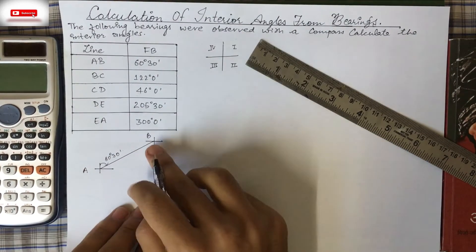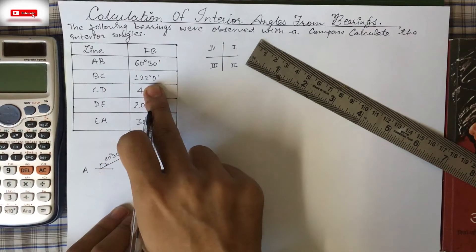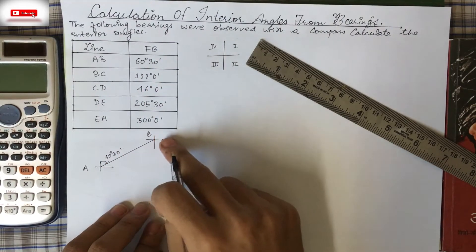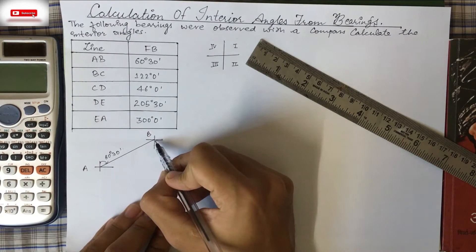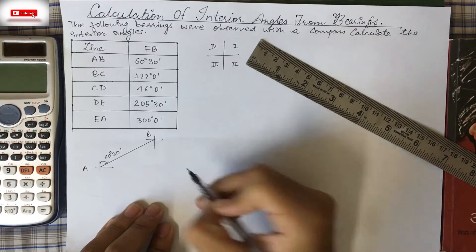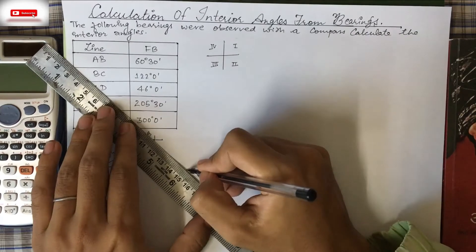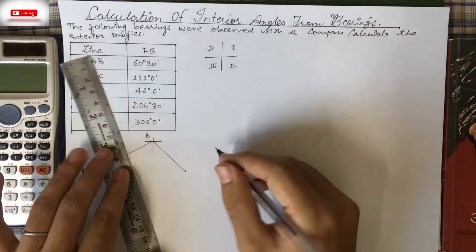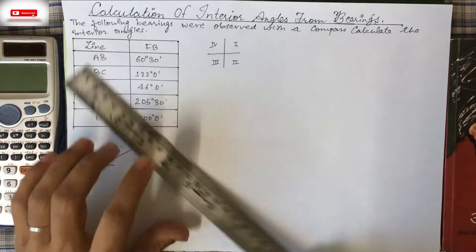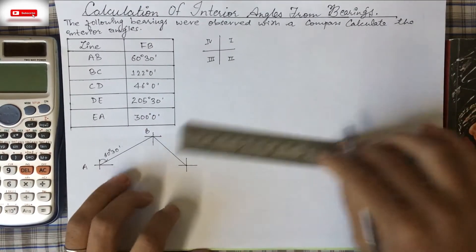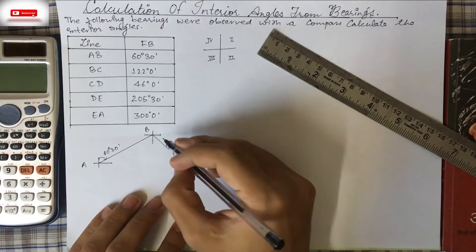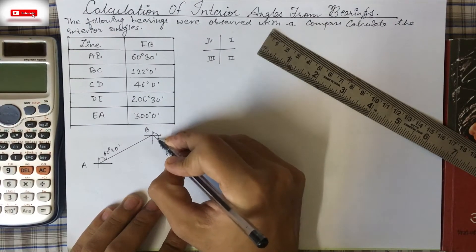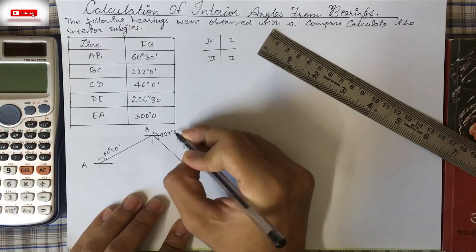From B to C the bearing is 122°0', which is in the second quadrant — more than 90° but less than 180°. Since 180° represents a straight line from this reference, 122° falls past 90°. We draw the line from B to C at 122°0'.